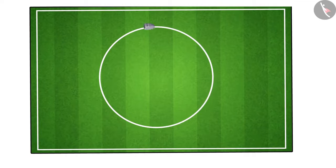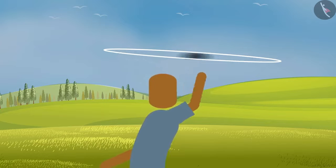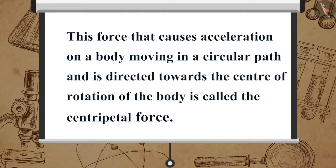The change in direction of the stone occurs due to the change in its velocity or acceleration. The force which maintains this acceleration and keeps the stone moving in a circular path acts towards the center. This force that causes acceleration on a body moving in a circular path and is directed towards the center of rotation of the body is called the centripetal force.